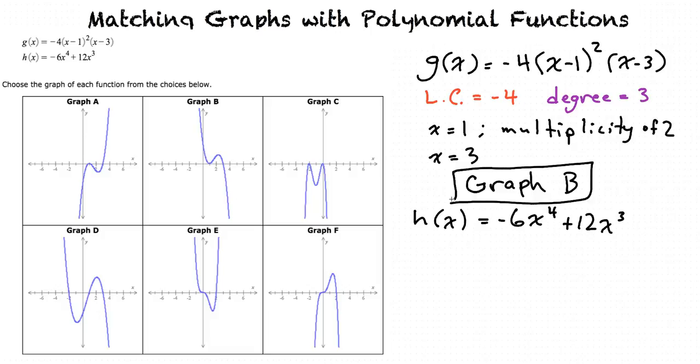Now our second function is negative 6x to the 4th plus 12x cubed. This one may be a little trickier. We can already see that the leading coefficient is negative with an even number degree of 4. So that means that both ends of the graph face downward. There are two graphs that completely face downward. So in order to get the correct one, we are going to have to factor this polynomial to find our zeros. Can you factor this polynomial?